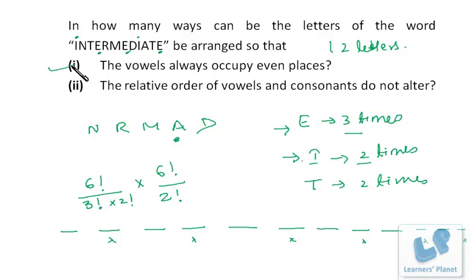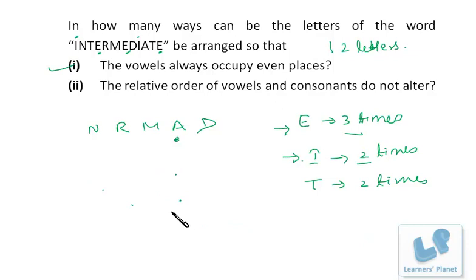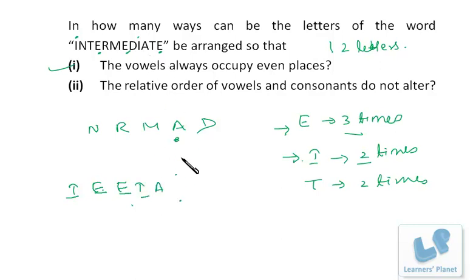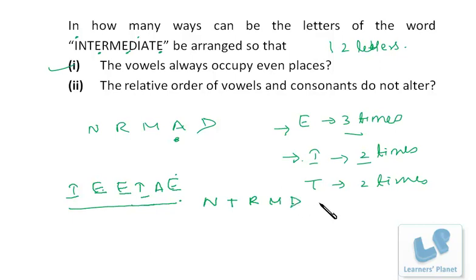The second case for INTERMEDIATE is: the relative order of vowels and consonants does not alter. The order of vowels is: I, E, E, I, A, E — and the order of consonants is: N, T, R, M, D, T. That gives 6 vowels and 6 consonants, totaling 12 letters.